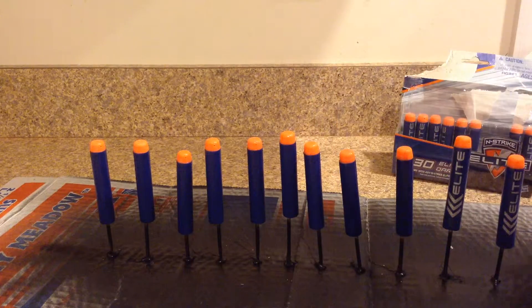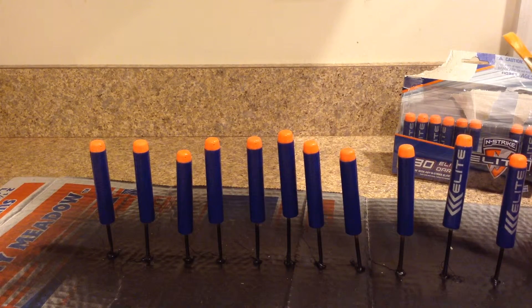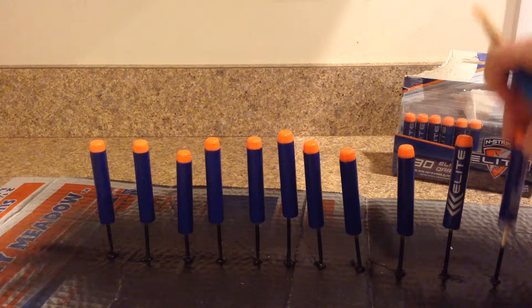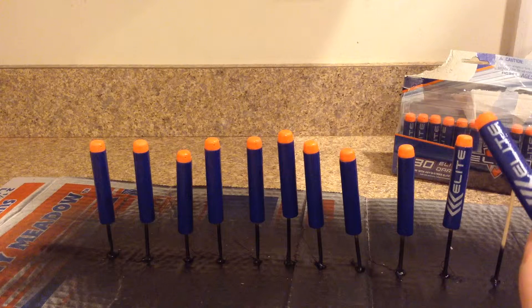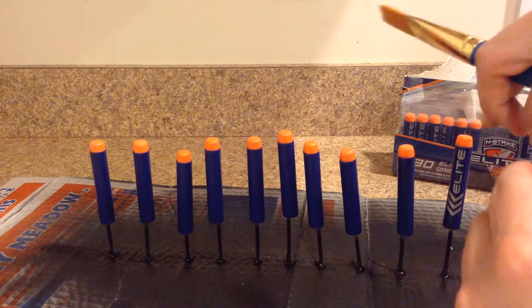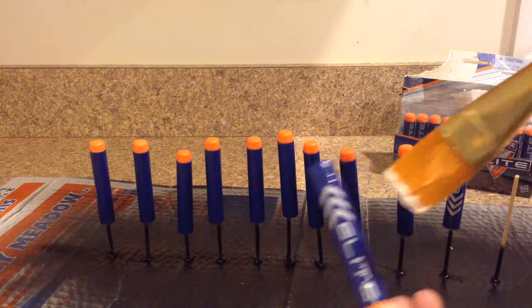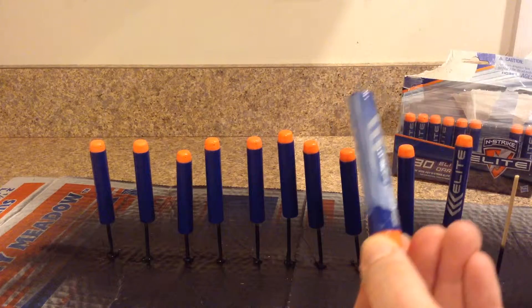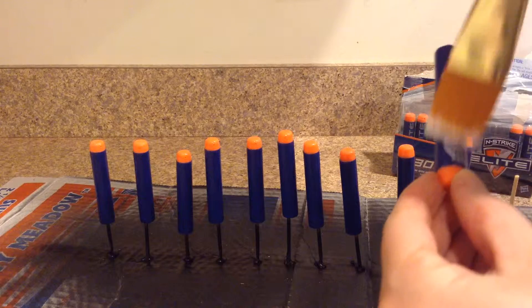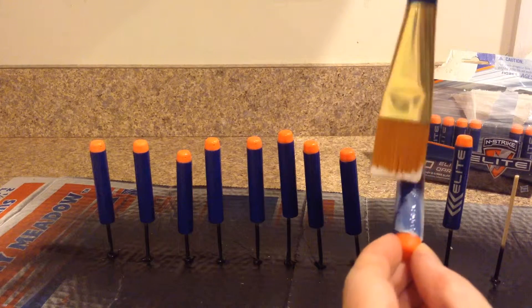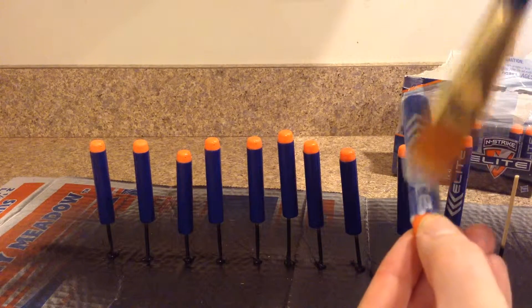And I'm using Mod Podge for my glue, and I'm basically just going through and doing several layers. I think I ended up doing like four layers on each one, and it's just a nice thick generous coating of the Mod Podge. This kind of gives you a nice smooth surface when you're painting them, and it also seals the foam so that the spray paint doesn't actually dissolve any of the foam product.